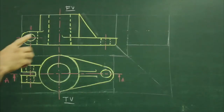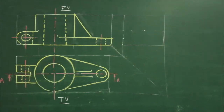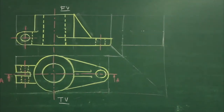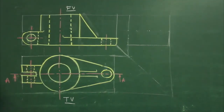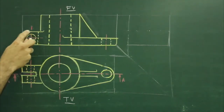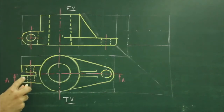In this problem, I have given front view and top view and we need to draw the side view. First, we will relate surfaces. If you see, there is a circle and there are two rectangles.